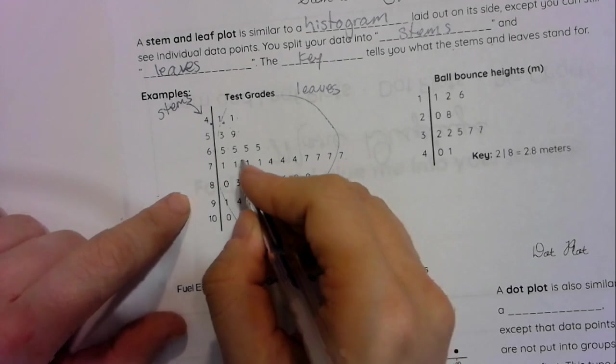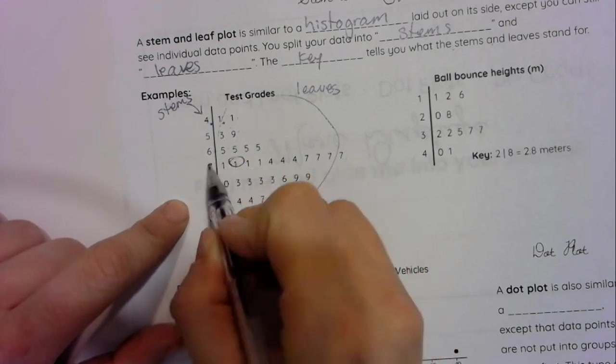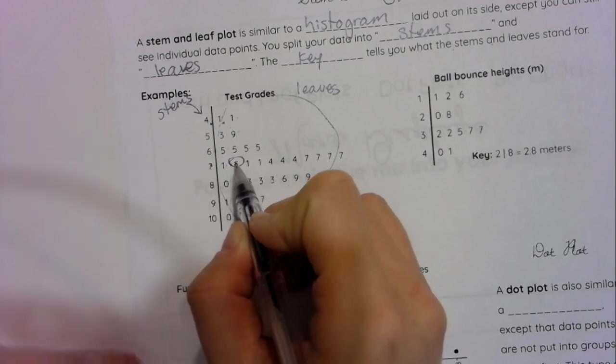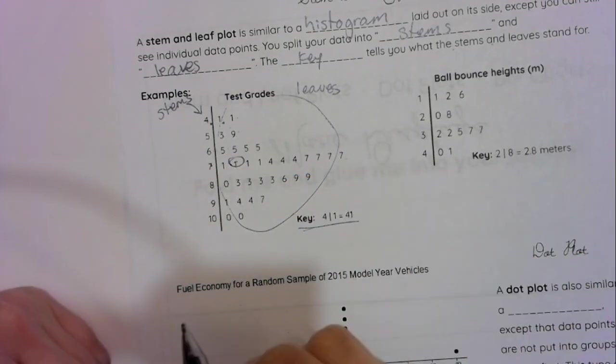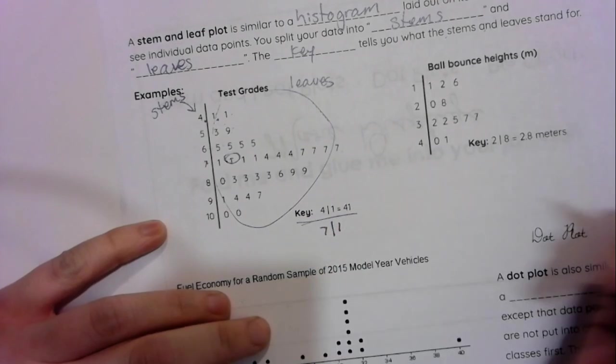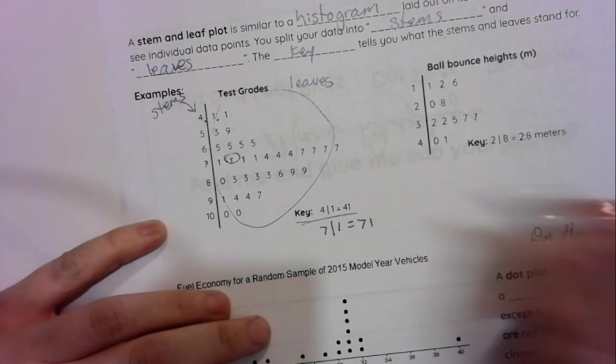I want you to think to yourself, what would this represent right here? That number right there, the seven stem and then the one as the leaf, what does that represent? And hopefully you said that seven as your stem and one as your leaf would represent 71.